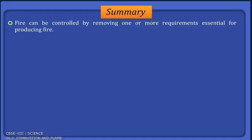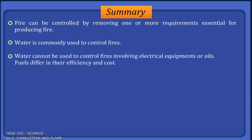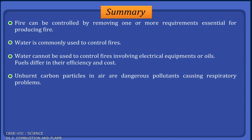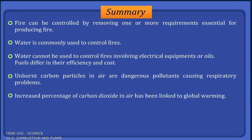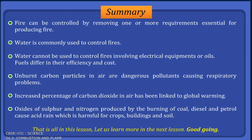Summary: Fire can be controlled by removing one or more of the requirements essential for producing fire. Water is commonly used to control fires, but cannot be used for fires involving electrical equipment or oils. Fuels differ in their efficiency and cost. Unburnt carbon particles in air are dangerous pollutants causing respiratory problems. Increased percentage of carbon dioxide in air has been linked to global warming. Oxides of sulfur and nitrogen produced by the burning of coal, diesel and petrol cause acid rain, which is harmful for crops, buildings and soil.